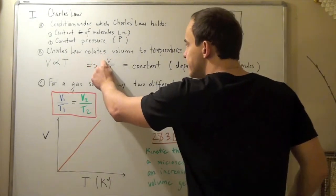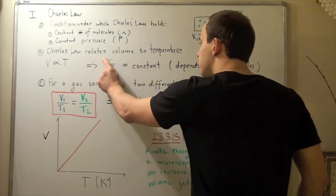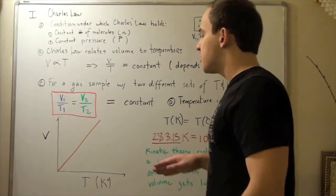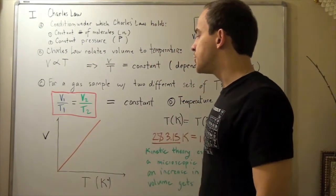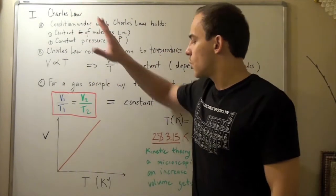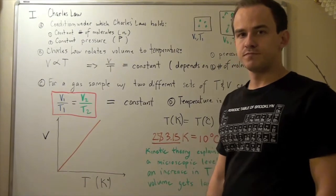Whenever V increases, T must increase by the same amount. If this is doubled, this is doubled. If this is tripled, this is tripled, and so on. That's why there is a linear relationship between V and T. This is how our graph for Charles's law will look when we graph volume versus temperature.